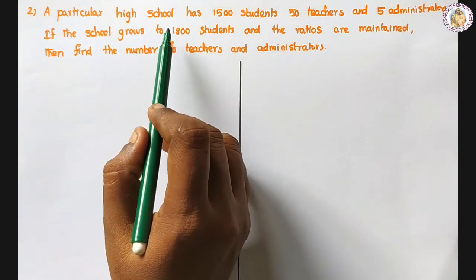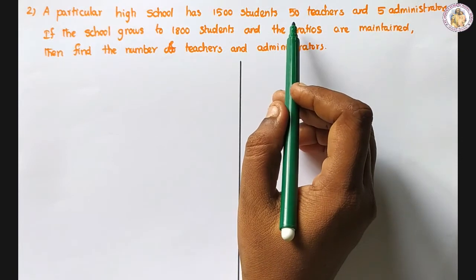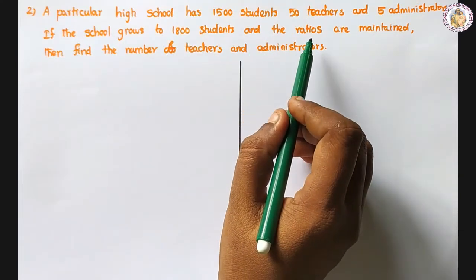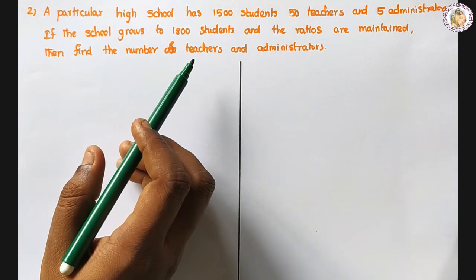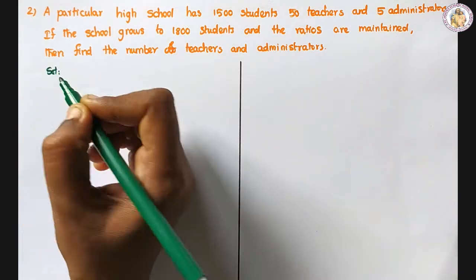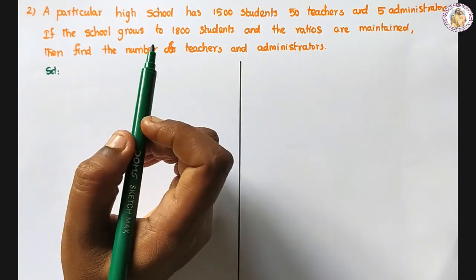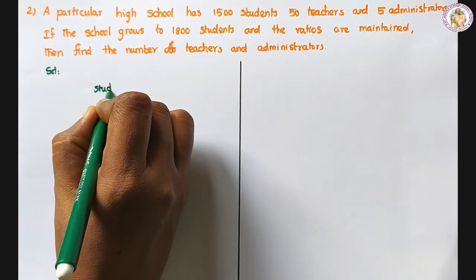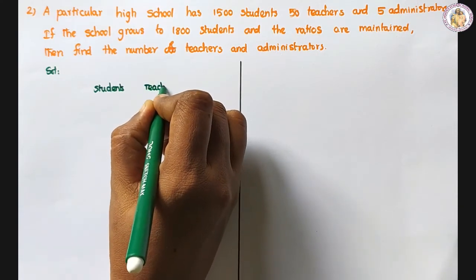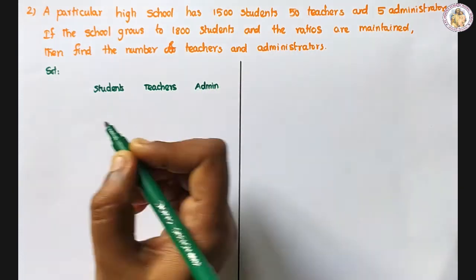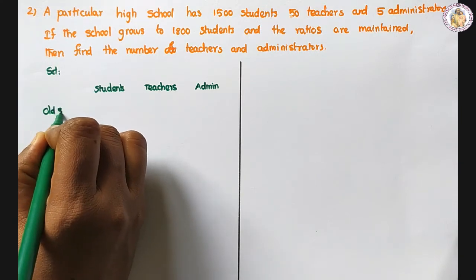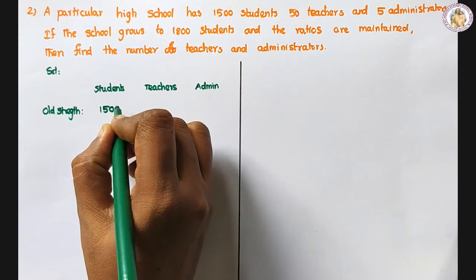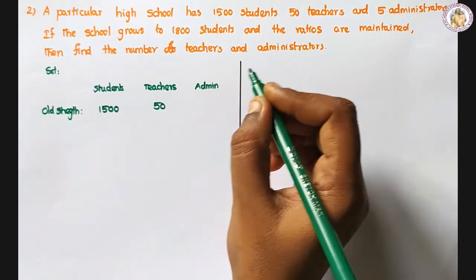Second question. A particular high school has 1500 students, 50 teachers and 5 administrators. If the school grows to 1800 students and the ratios are maintained, then find the number of teachers and administrators. For old strength: students is 1500, teachers 50, and administrators 5.